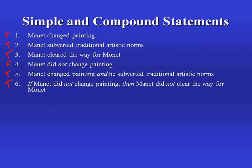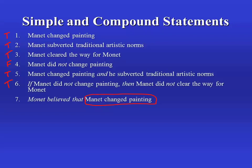Not all compounding functions are like that, however. Take number seven. We take sentence one, Manet changed painting, and attach to that 'Monet believed that', so we get a new statement: Monet believed that Manet changed painting. Now, of course, we're taking the number one portion of the sentence to be true, but just on the basis of that, we can't determine whether the whole is true or not. We would need to do some historical or biographical research. So for seven, we can't determine the truth value of the whole simply on the basis of the parts.